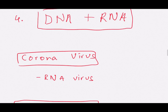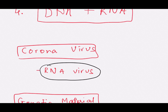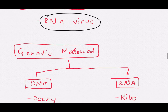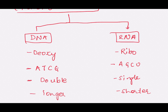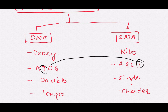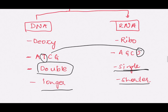Because of the coronavirus, DNA and RNA are in use. You should know that coronavirus is an RNA virus. In human beings, the genetic material is DNA, but some viruses have DNA and others have RNA as their genetic material. The full form of DNA is Deoxyribonucleic Acid, and RNA is Ribonucleic Acid. DNA is formed by four nucleotides: adenine, thymine, cytosine, and guanine. RNA is formed by adenine, guanine, cytosine, and uracil — thymine is replaced by uracil. DNA is double-stranded and longer, while RNA is single-stranded and shorter.